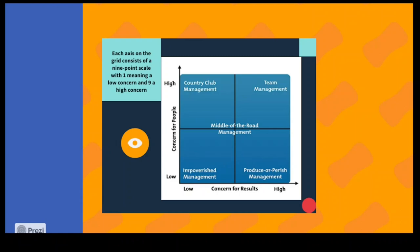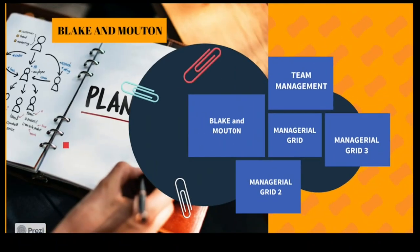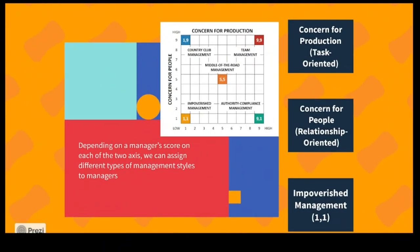Looking at the four corners: team management, country club management, middle of the road management, empowerment management, and produce or perish management. Depending on a manager's score on each of the two axes, we can assign different types of managers. A company can assess the manager's attitude and performance, and the interview panel may use this to determine what kind of leader they are hiring.